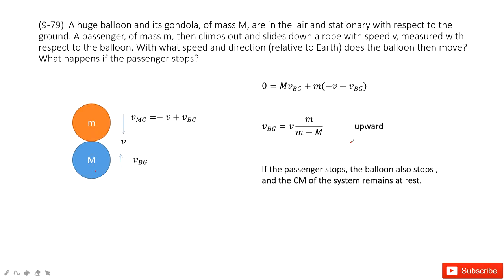And I ask you, if this passenger, that means small m, stops, what does capital M do? It should be zero. Why? Because the center of mass should be kept stationary. When this one stops, this one must stop. Thank you.